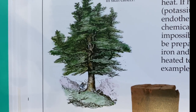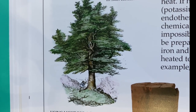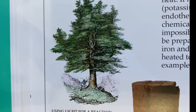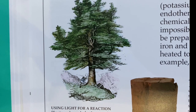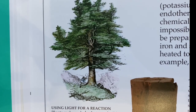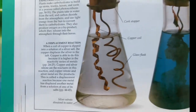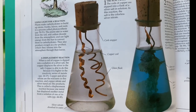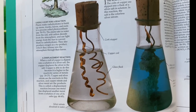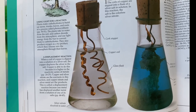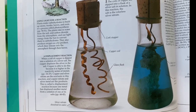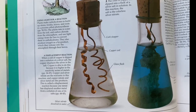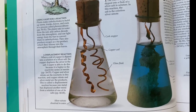Plants take in water from the soil and carbon dioxide from the atmosphere, and use light energy from the sun to convert them to carbohydrates. They also produce oxygen as a byproduct, which they release into the atmosphere through their leaves. Now we're going to look at a displacement reaction. When a coil of copper is dipped into a solution of silver salt, the copper displaces the silver in the salt. Copper is able to do this because it is higher in the reactivity series of metals.